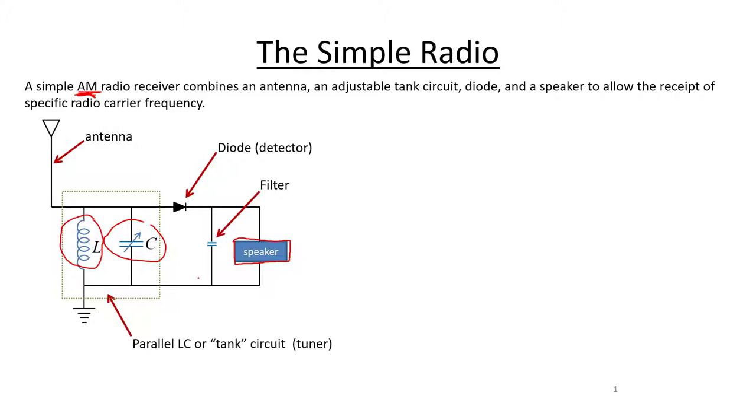So we're going to follow the signal in our simple radio receiver from sort of off this end of the diagram to the antenna and through the tuner or tank circuit, through the detector or decoder, this diode and filtering element to the speaker. And each video is approximately going to cover one of these elements.